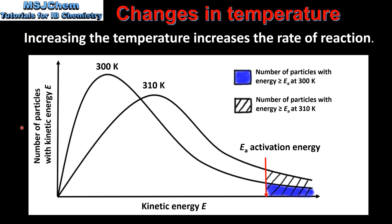Here we have a Maxwell-Boltzmann distribution curve for two samples of gas at different temperatures. The red arrow represents the activation energy for the reaction. The area in blue represents the number of particles that have energy equal to or greater than the activation energy at 300 Kelvin. The shaded area represents the number of particles with energy equal to or greater than the activation energy at 310 Kelvin.